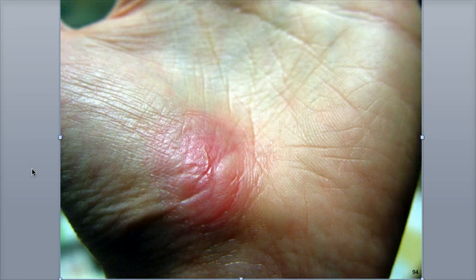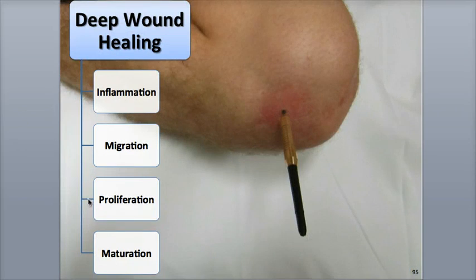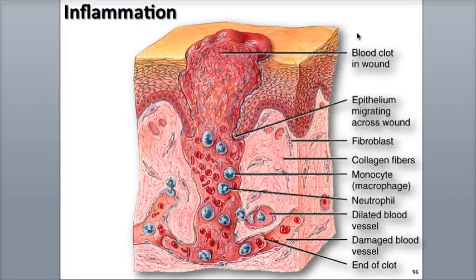There are four phases involved in deep wound healing: the inflammatory phase, a migratory phase, a proliferative phase, and a maturation phase.